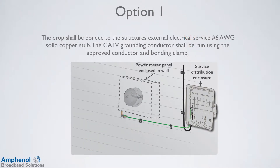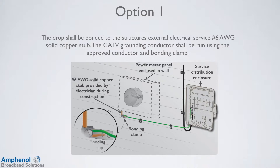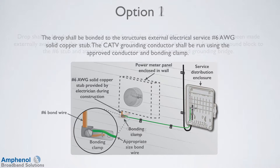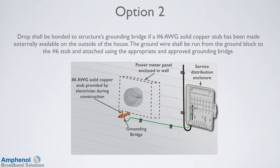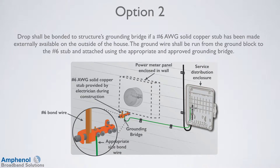Next we'll look at 7 bonding options. Option 1 is the best option: the drop is bonded to the structure's external electrical service number 6 gauge wire or solid copper stub at the meter panel using an approved conductor and bonding clamp. Make sure it is free of corrosion and do not move other bonds to make room for yours. If there is no room, go to one of the other bonding options. Option 2: often there is more than one utility bonding at the meter panel — in this case, attach to an open location on a bus bar, also called a grounding bridge, if available.